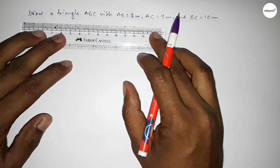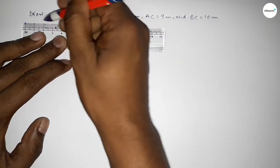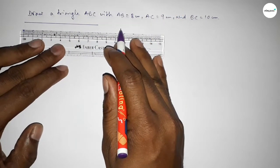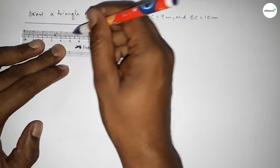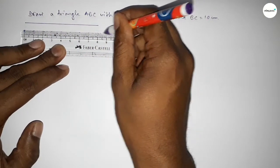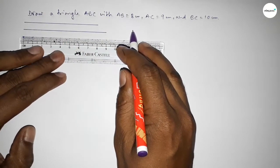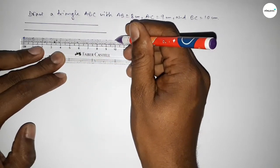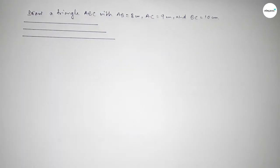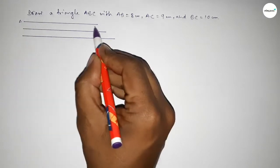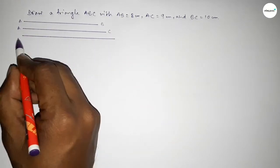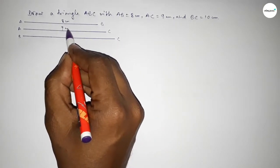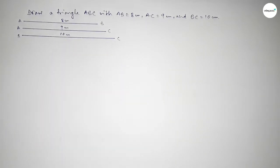First of all, drawing a line of length 8 centimeters — this is 8 centimeters. Next, drawing another line of length 9 centimeters — this is 9 centimeters. And drawing another line of length 10 centimeters — this is 10 centimeters. So this is the AB line, this is the AC line, and this is the BC line.